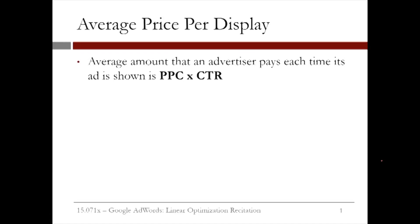In the previous video, we introduced the concepts of price per click and click-through rate. Once we know both of these quantities, we can calculate the average price per display. This is simply the average amount that an advertiser pays when a user is shown their ad. We can compute this by multiplying the price per click with the click-through rate.